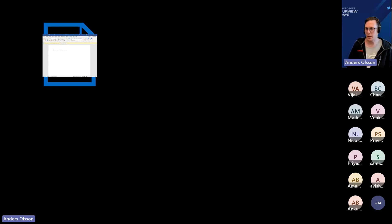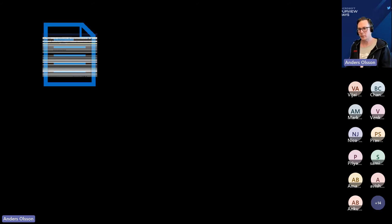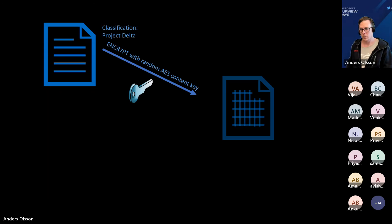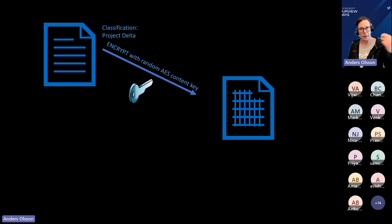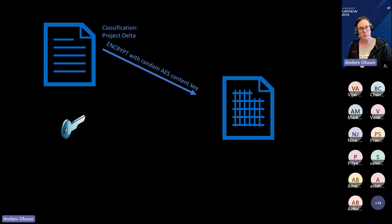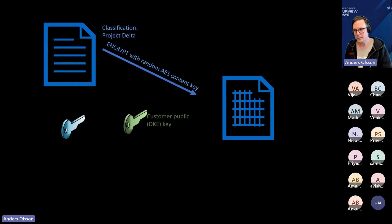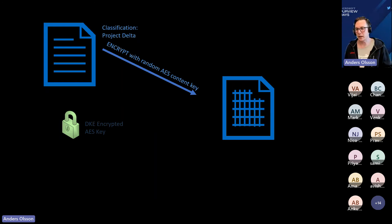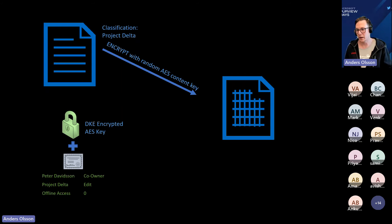What's happening here is that if Peter applies encryption to the file, the file will still be encrypted with a randomized content key — nothing changed there. But this unique content key is encrypted in such a way that it's impossible for someone — even Microsoft — to open that content. We still have the policy and the permissions for the file that is verified through the Azure service, which means we can give access both internally and externally. And now we have a DKE encrypted file.